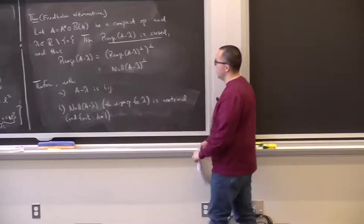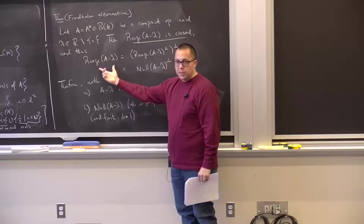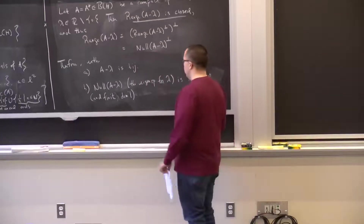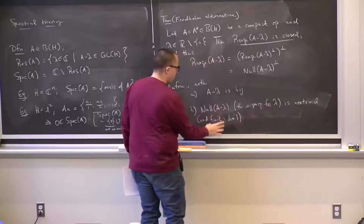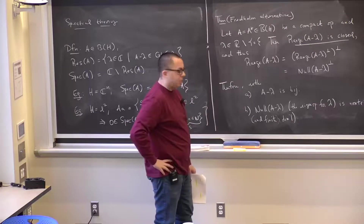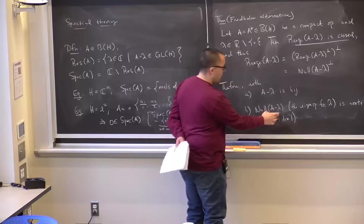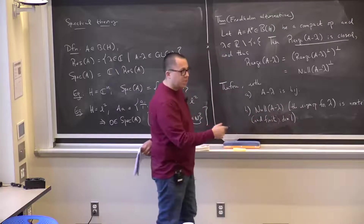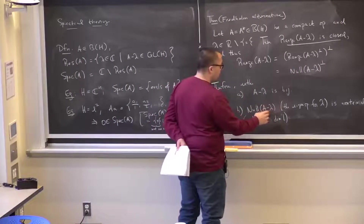Moreover, this equality tells you when you can solve A minus λ times u equals f: you can solve it if and only if f is orthogonal to the null space of A minus λ. The finite-dimensionality of that eigenspace was proved last lecture, as was the fact that eigenspaces for distinct eigenvalues are orthogonal, and that all eigenvalues must be real.